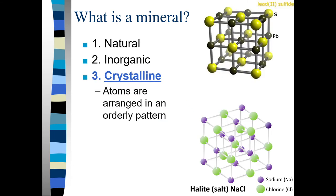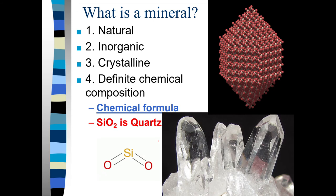A mineral must be crystalline — the atoms have to be arranged in an orderly pattern. Here's lead sulfide, which is galena — it bonds in cube shapes, as does halite, which bonds similarly despite being completely different elements. These are crystalline. A mineral also must have a definite chemical composition: SiO2 is quartz, NaCl is halite.